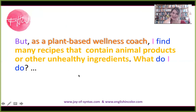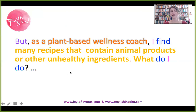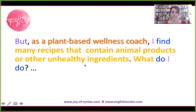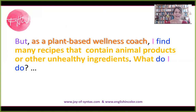Let's fix this: 'But, as a plant-based wellness coach, I find many recipes that contain animal products or other unhealthy ingredients.' In this case we didn't need the correlative conjunction — we could simply ditch the 'either.' In other cases, you need to either come up with a verb or rearrange the sentence in other ways. But I thought this was the easiest fix.